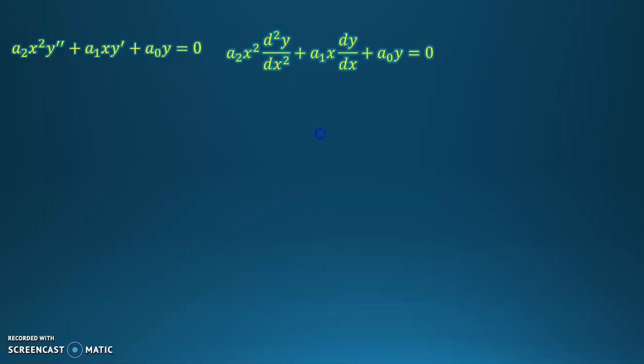However, let's solve this problem with a different substitution. In this case we'll have that the natural logarithm of x is equal to t, so this implies that x equals e to the t. With this substitution, let's go ahead and solve this Cauchy-Euler equation.